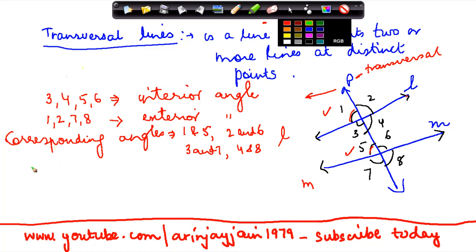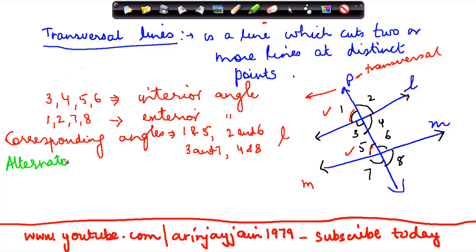Next is alternate interior angles. We know that three, four, five, and six are the interior angles. If I see angles three and six, they are alternate to each other. Similarly, four and five are alternate to each other. So these pairs are called alternate interior angles.